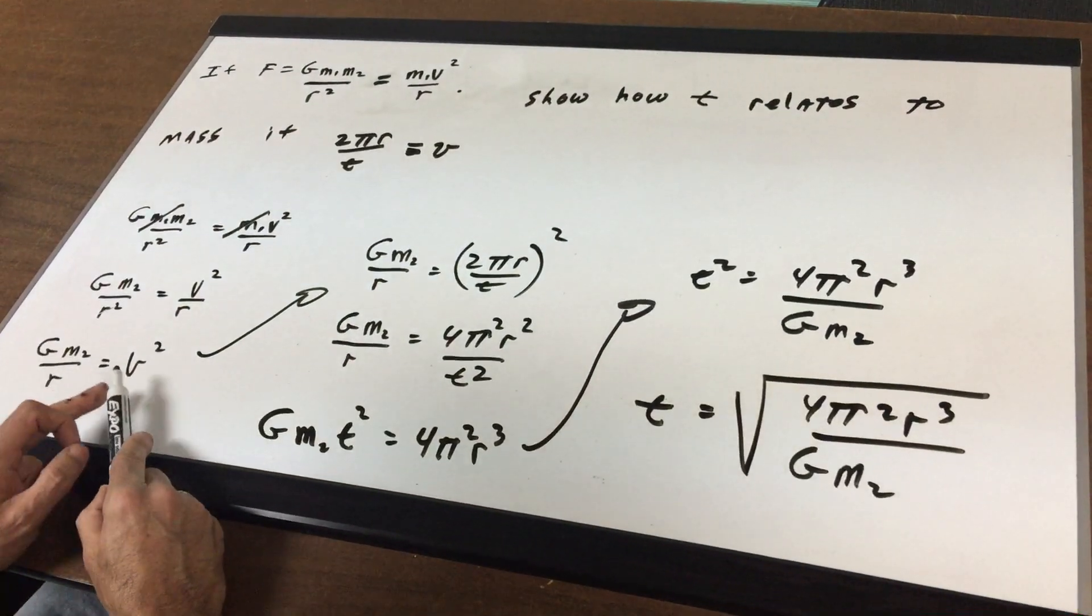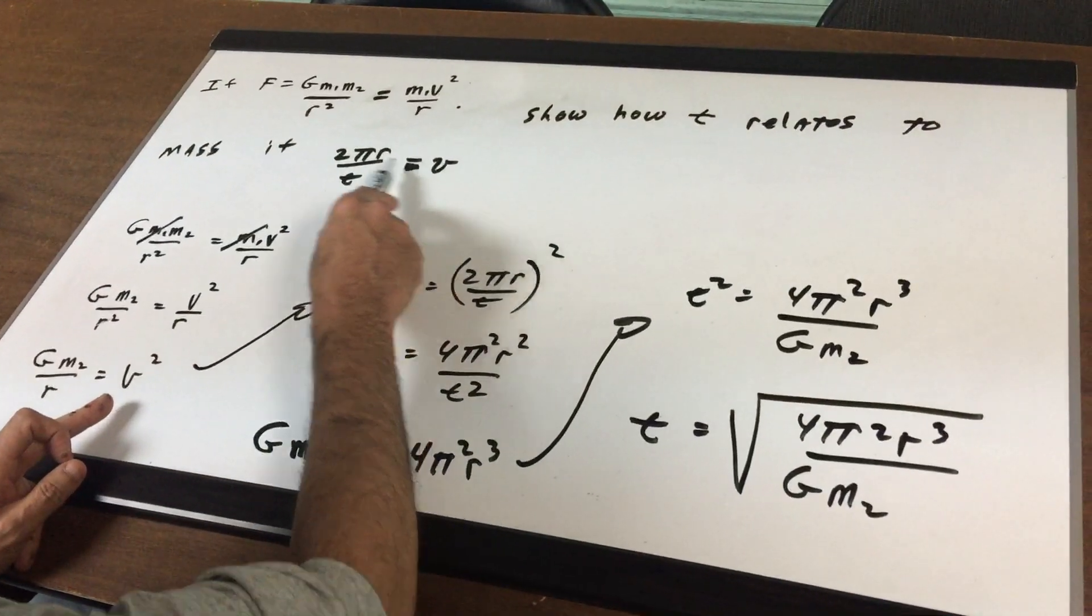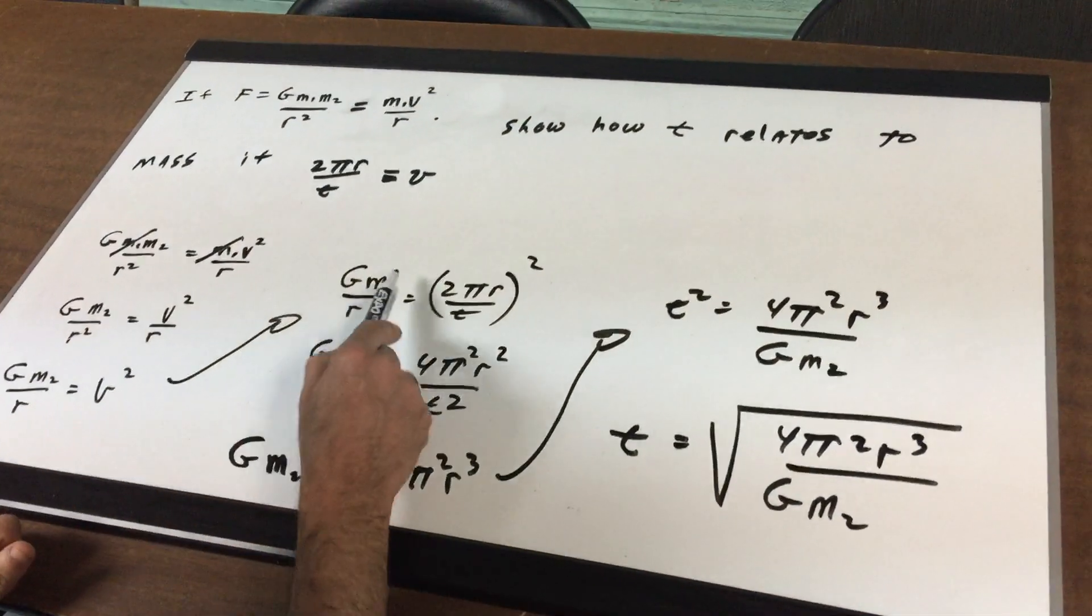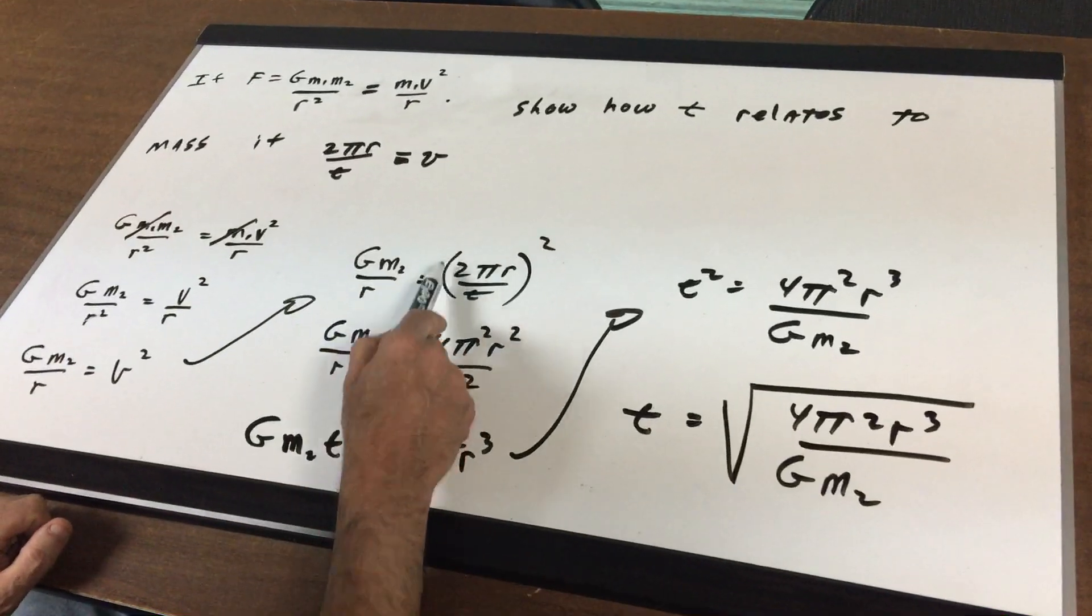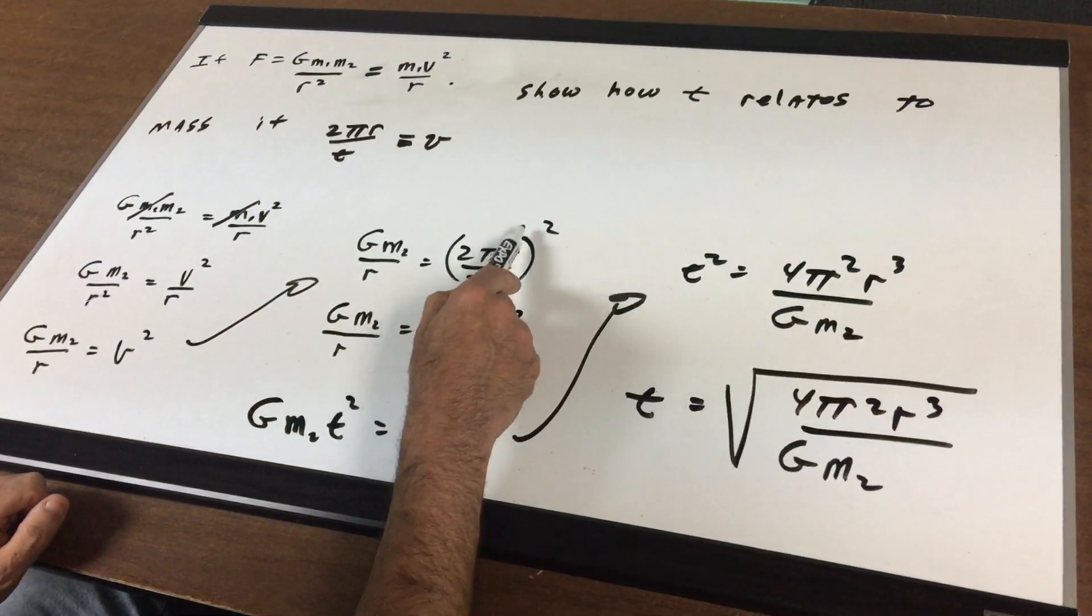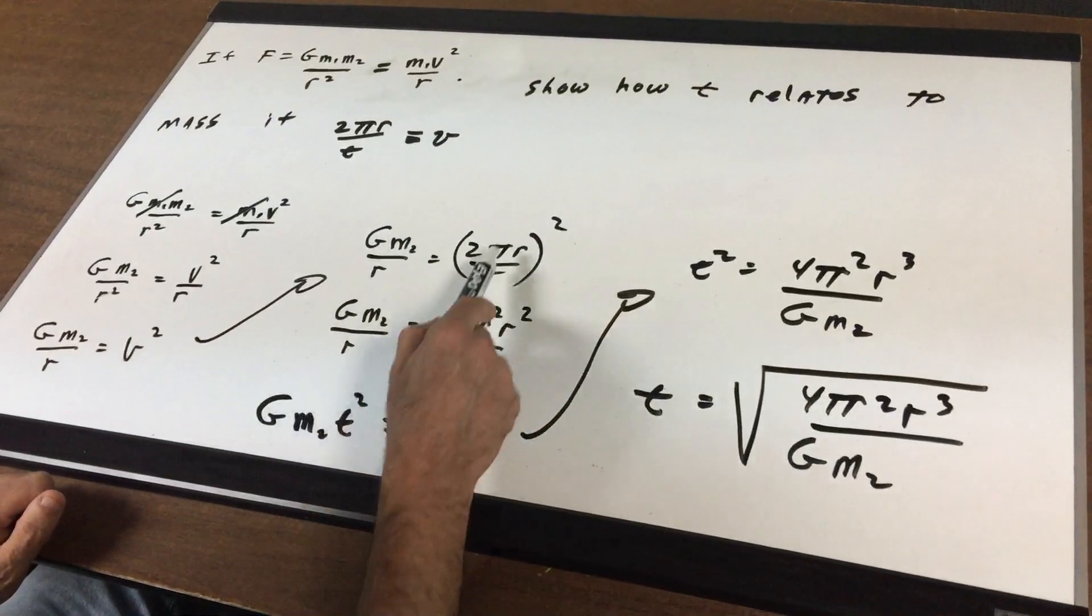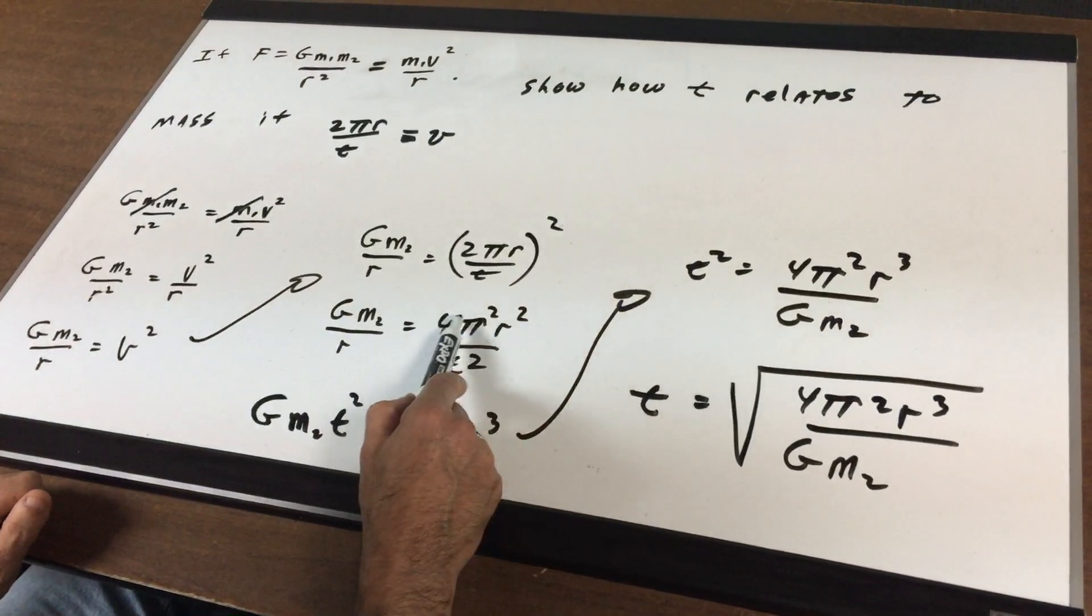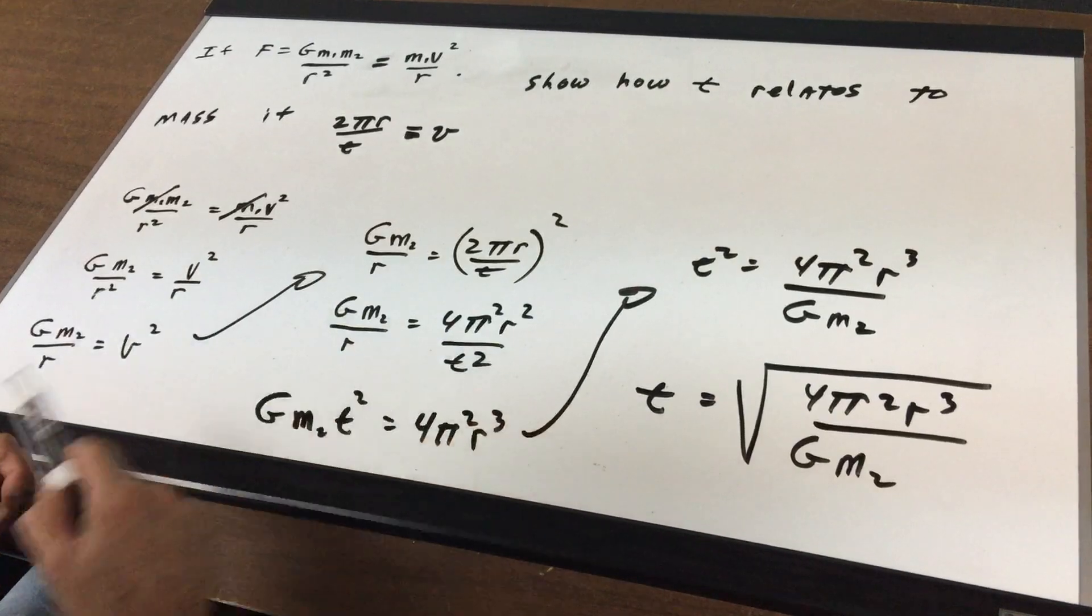Now, I'm going to substitute v for 2 pi r and square it. So it's going to be g m2 r equals 2 pi r over the t, which is the time, squared. That gives me 4 pi squared r squared t squared.